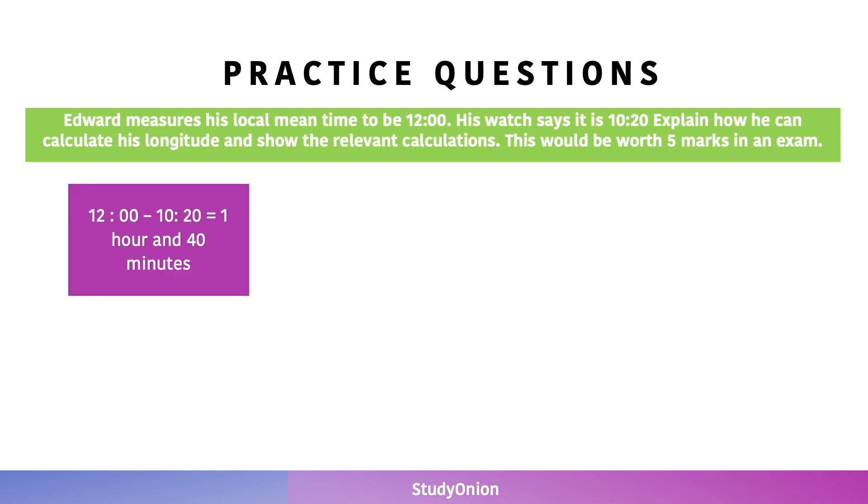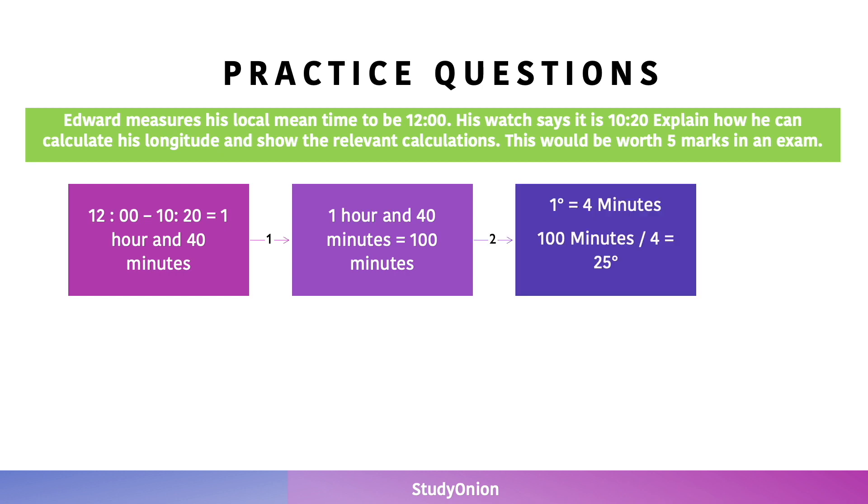Alright, let's walk through this question. The first step is to calculate the difference between his local mean time and his mean solar time. 12:00 minus 10:30 is 1 hour and 40 minutes. The next step would be to convert that into minutes. 1 hour and 40 minutes equals a total of 100 minutes. Then, because we know that 1 degree equals 4 minutes, we do 100 minutes divided by 4 to get the number of degrees that it has traveled. That is 25 degrees.